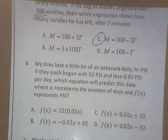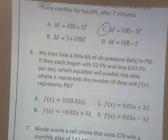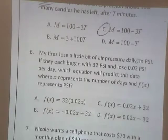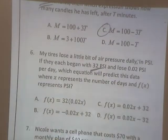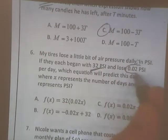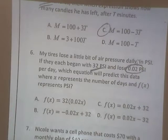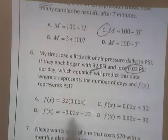We're on number 6. My tire loses a little bit of air pressure daily in PSI. If they each begin with 32 PSI and lose 0.02 PSI per day, which equation would be for data where x represents the number of days and f(x) represents the PSI? So we're starting with how much? 32. Plus 32 somewhere, or positive 32. And then we're subtracting out this per day. Subtracting that out and we're starting with 32.